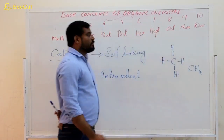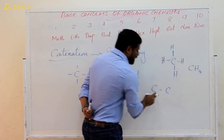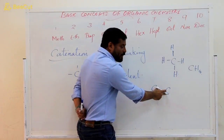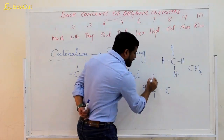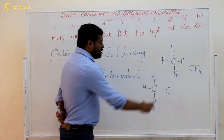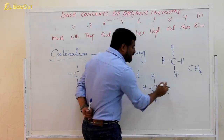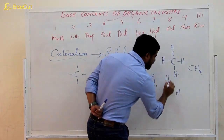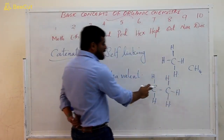Now, moving to the second compound — two carbon atoms. In this carbon, one valence is satisfied with another carbon, so the remaining three valences are satisfied by three hydrogen atoms. For the second carbon, one valence is satisfied with the first carbon, so the remaining three valences are satisfied by another three hydrogen atoms. In this case: two carbon atoms and six hydrogen atoms — C2H6.